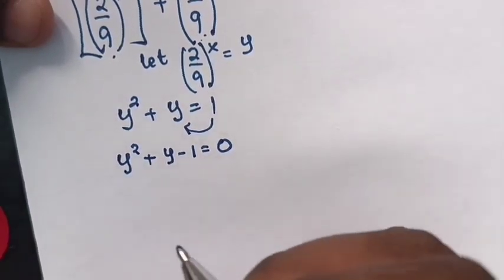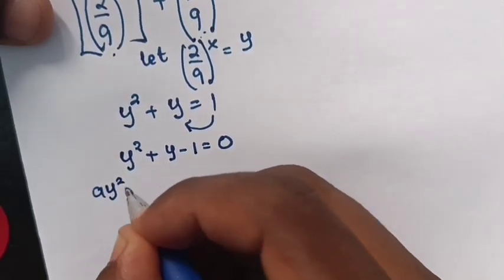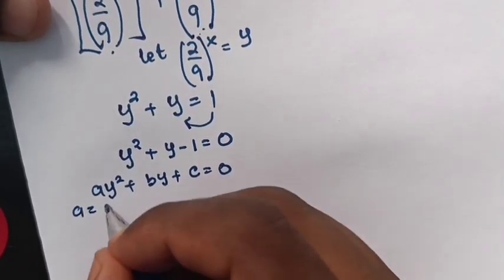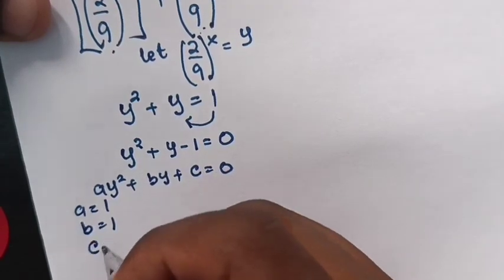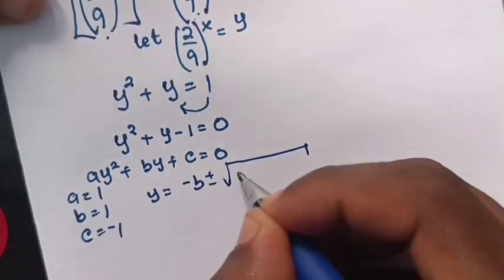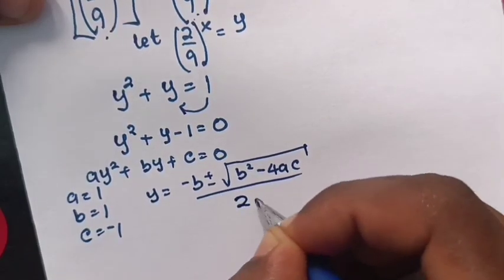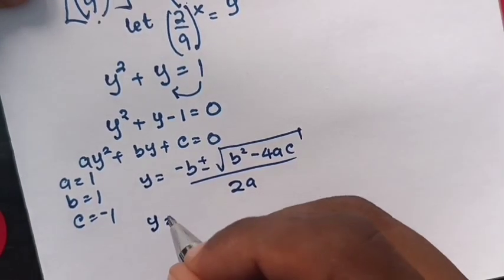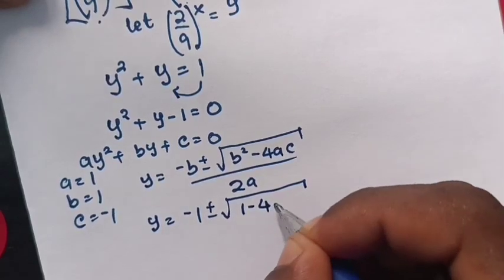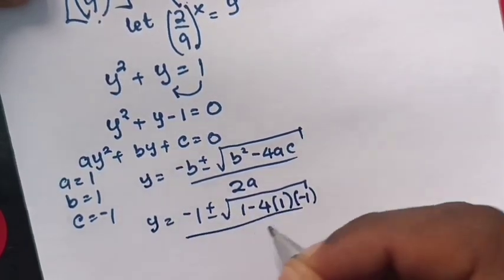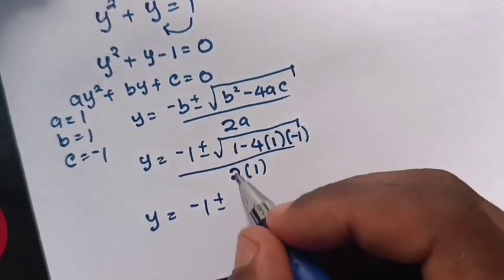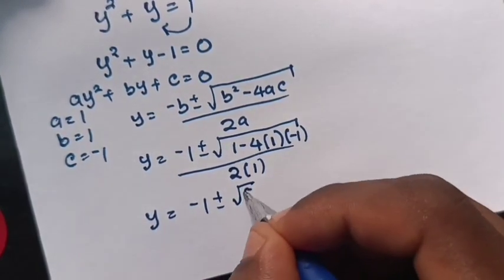Now this equation is in the form of the quadratic formula: a y squared plus b y plus c is equal to 0, where a is 1, b is 1, and c is negative 1. From the quadratic formula, y is equal to negative b plus or minus square root of b squared minus 4ac over 2a. We substitute: y equals negative 1 plus or minus square root of 1 minus 4 times 1 times negative 1, over 2 times 1. So y is equal to negative 1 plus or minus square root of 5 over 2.